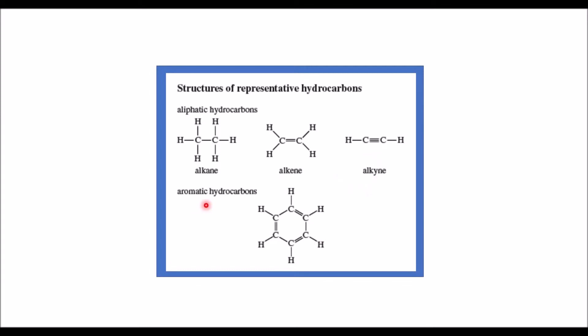Members of the aromatic hydrocarbon family have a ring of six carbon atoms with alternating double and single bonds.